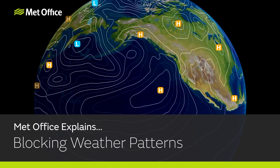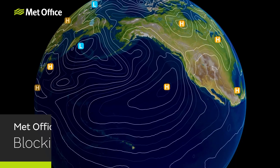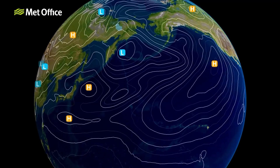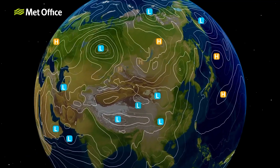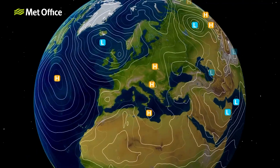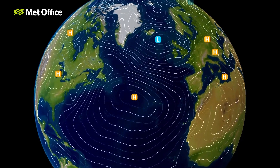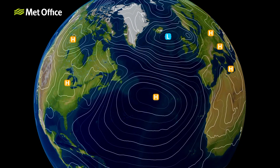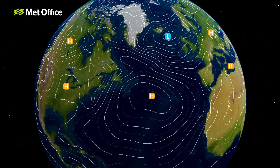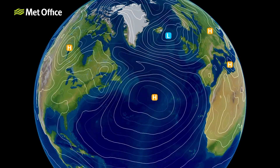In meteorology, blocks are types of pressure patterns that upset the usual eastward progression of our weather, which in the UK normally arrives from the southwest. The blocks can remain in position for several days, which will lead areas under them to have similar weather for a prolonged period of time.